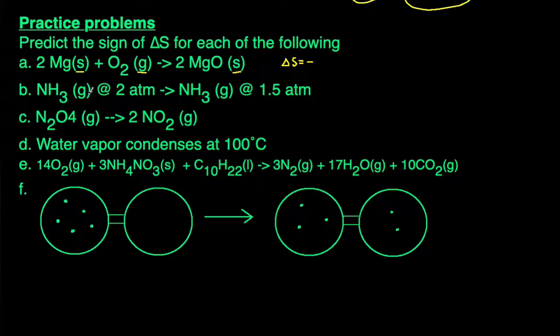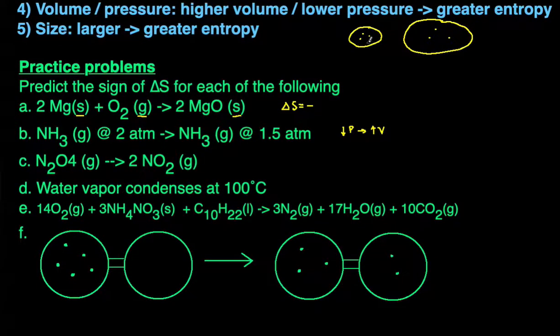For the second one we have ammonia gas at 2 atm becoming ammonia gas at 1.5 atm. Here we have the same substance, the same state. The only difference is there was a decrease in pressure, and when there's a decrease in pressure that means there's an increase in volume. Since we have an increase in volume, that means there's more possibilities, so there's going to be greater entropy, and delta S is positive.